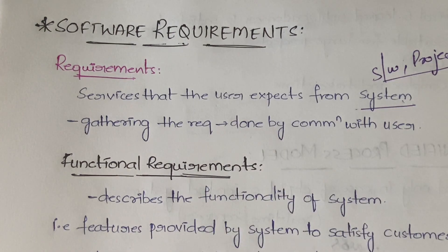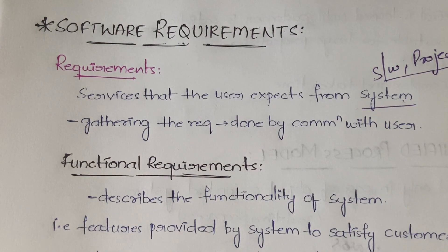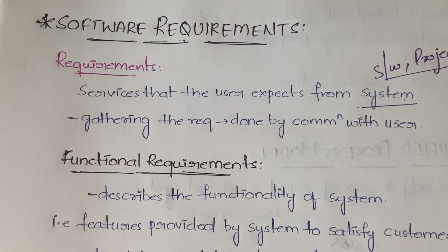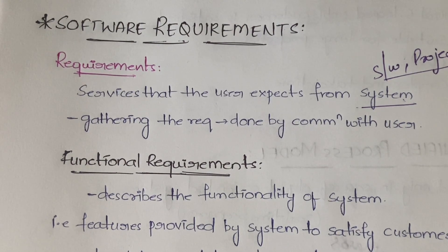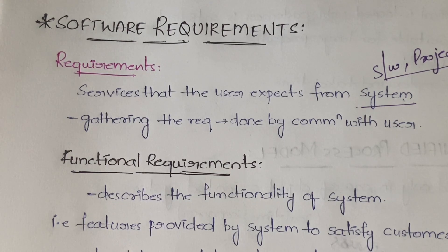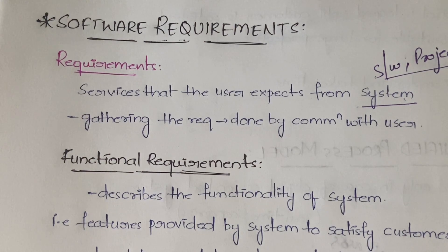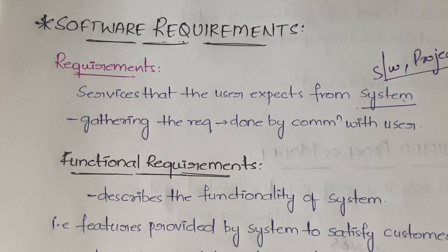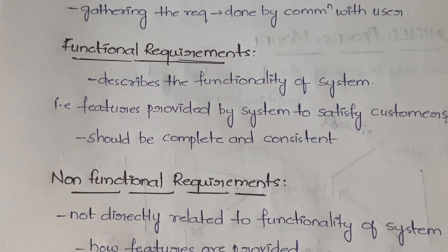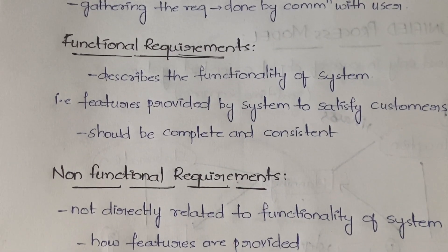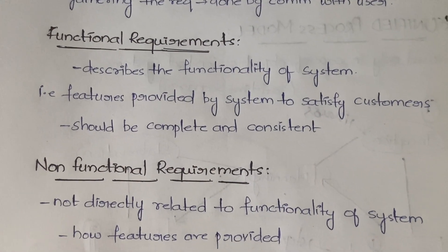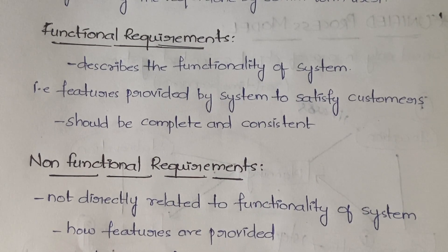Gathering the requirements is done by communicating with the user. In requirements, we have functional and non-functional — this is based on the functionality. We also have user requirements, system requirements, and others, but based on functionality we have two types. Let us see those two; the other categories I'll explain in the next video.